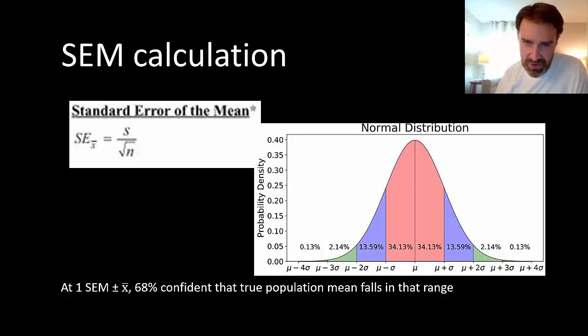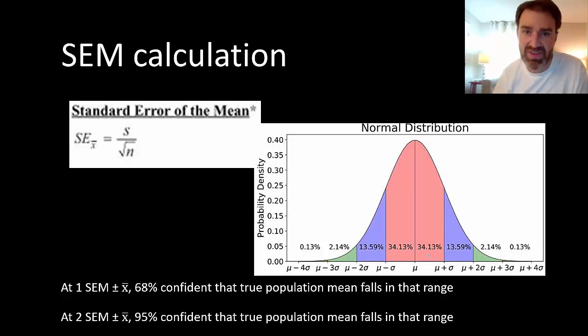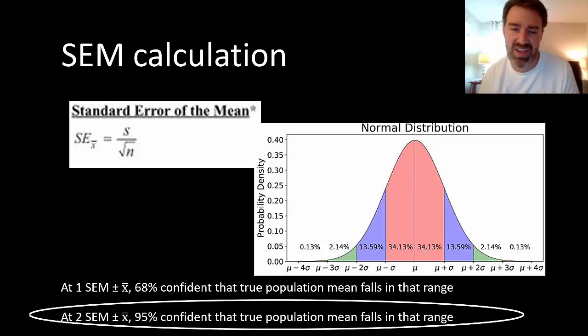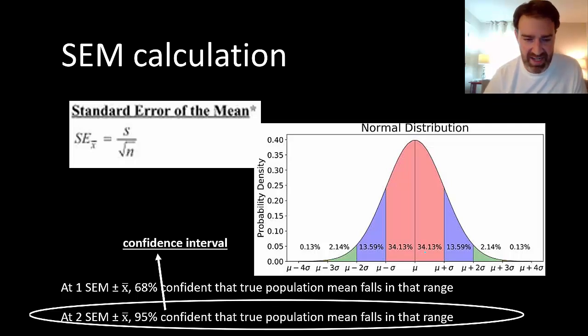As it turns out, what we're going to do much more often here in AP Biology is we're going to add and subtract two SEMs from the sample mean, because at two standard deviations away you'd be adding the purple and the pink numbers. That gives us 95% confidence that the true population mean would fall within that range, and that's pretty good. That gives us a lot of confidence. So that's going to be our typical move. By the way, this is called a confidence interval sometimes too. So we're often going to try to establish a 95% confidence interval.